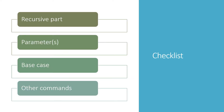The checklist of the parts of a recursive function is as follows. Every recursive function has a recursive part where the name of the function is called inside the function. It usually has one or more parameters, a base case, and some other commands which do whatever the work of the function is. So let's apply that four-part checklist to a worked example.